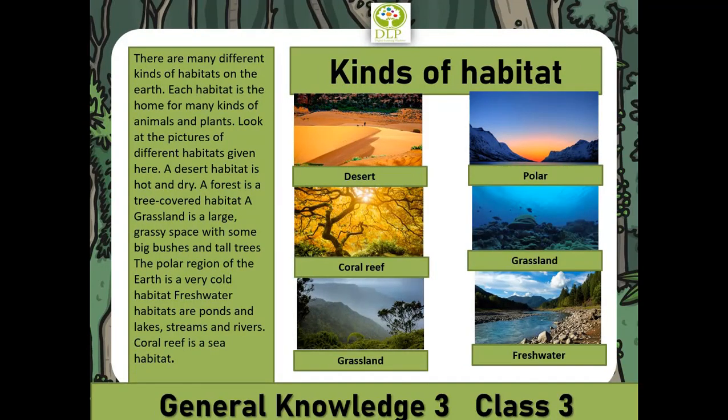There are many different kinds of habitats on the Earth. Each habitat is the home for many kinds of animals and plants. Look at the pictures of different habitats given here. A desert habitat is hot and dry. A forest is a tree-covered habitat.